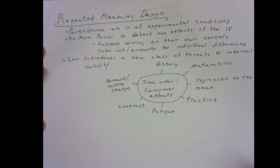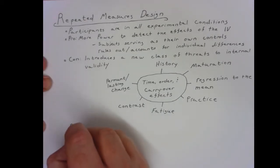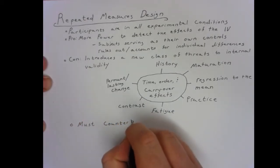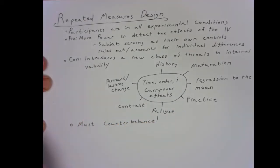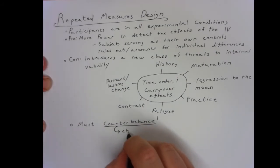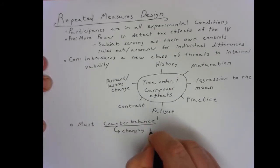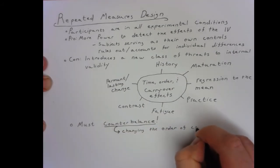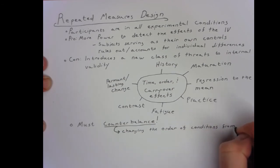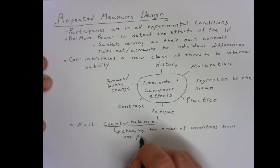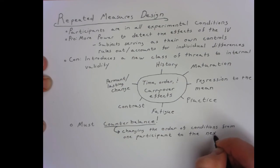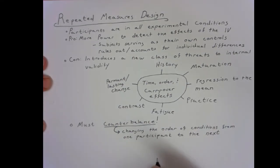To help deal with this, you have to do something called counterbalancing, such that these time and order effects are controlled for methodologically. Counterbalancing, in a simple definition, means you have to change the order of the conditions from one participant to the next.